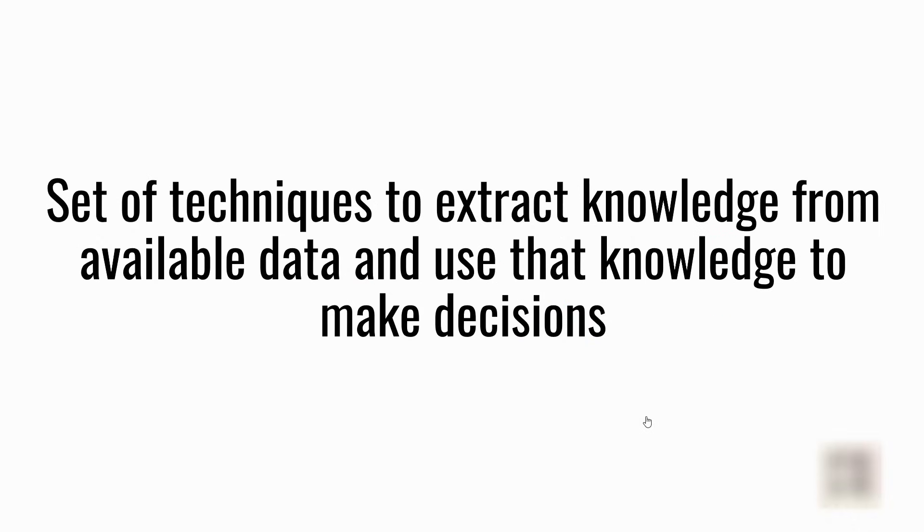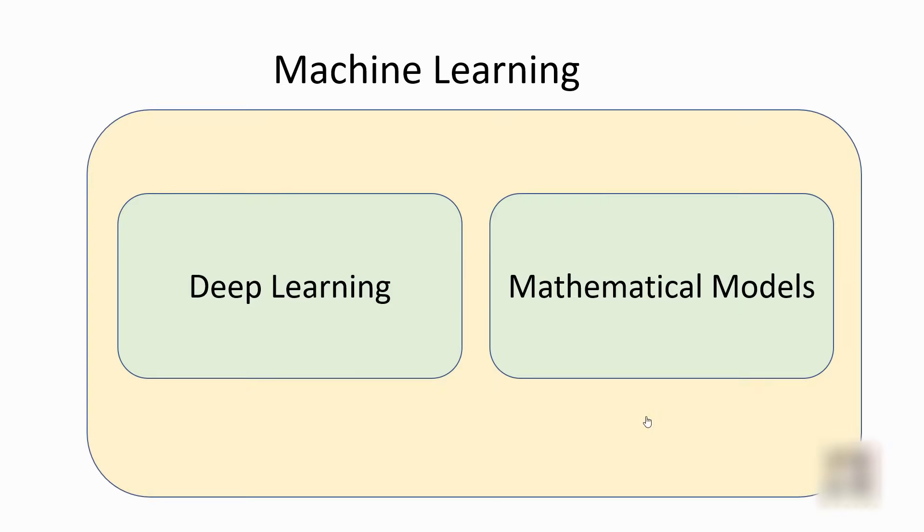There are other techniques where we use the knowledge present in available data, we extract it, and use that knowledge to make our future decisions. So overall, machine learning is a bigger area. Deep learning is one part of it, and there are mathematical and statistical models that we use to make predictions. That's another area.